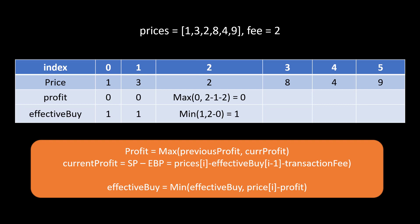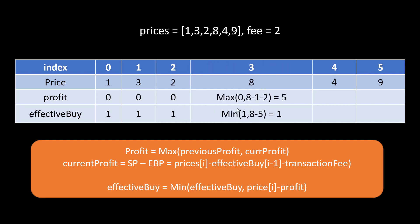Moving on to another day we continue the same process. The profit is the maximum of the previous profit or the current profit, which is selling at 2, with effective buy price of 1 and transaction fee, giving a maximum of zero. The effective buy price becomes the minimum of the previous buy price or the current price minus profit, which gives a minimum of 1. Moving ahead to index 3, the profit becomes 5 and the minimum effective buy price is still 1.